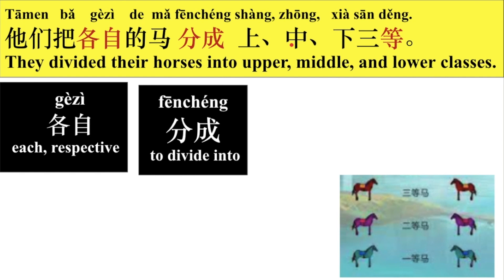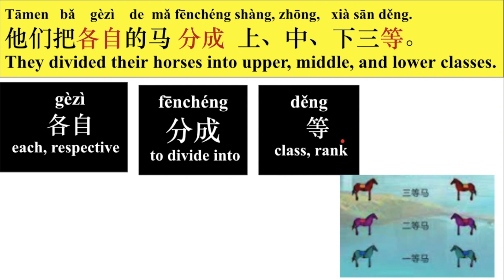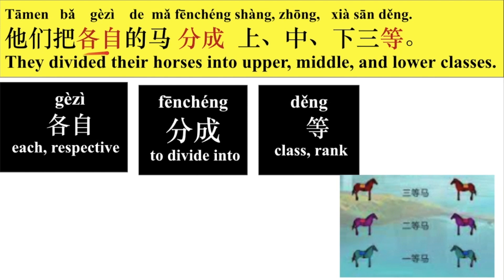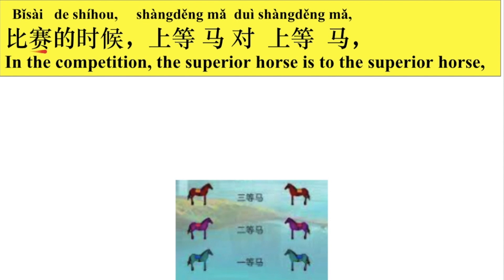那么下等的马就会不如中等的马。好，分成上、中、下三等。等，它可以表示等级。例子：这件衣服是一等品，是非常好的衣服。他们把各自的马分成上、中、下三等。